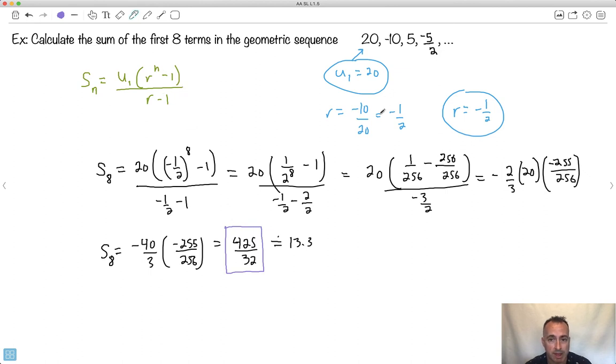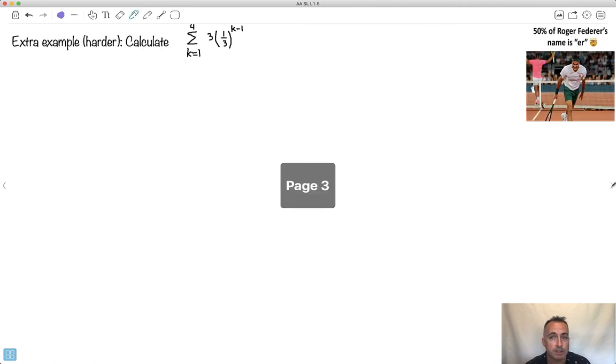So although the math might look uglier, the equation, the idea of doing it is just, it's okay. It's just that the math gets a bit more gross. Let's do an even more gross one. I like this one here, though. 50% of Roger Federer's name is just Ur. And it's actually not even 50%. Whoever did this meme is slightly wrong. It's actually more than 50%. But anyway, so harder example.